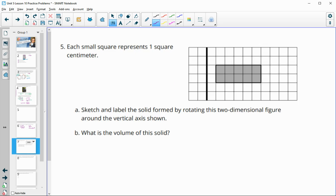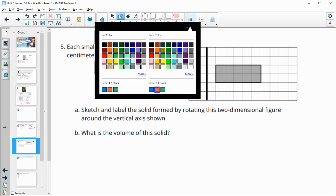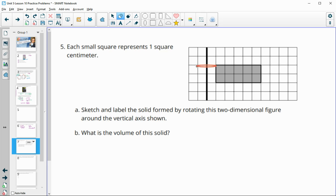Number 5, each small square represents 1 square centimeter. Sketch and label the solid form by rotating this figure around the vertical axis. So I'm just going to use these circles to draw it. We'd have kind of this hole in the middle that has a radius of 1. Then we would also have a circle formed kind of this big that goes that full distance. On top and bottom, we would have this.